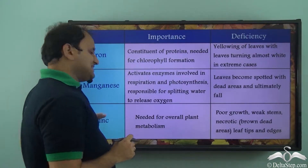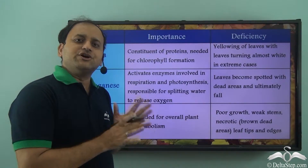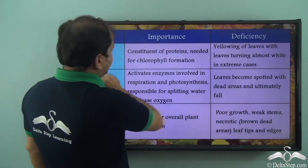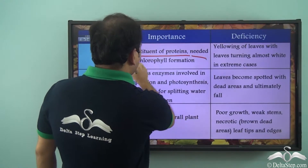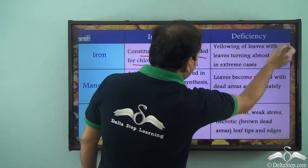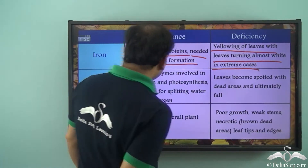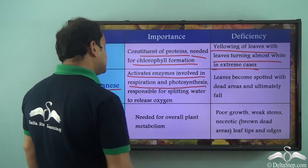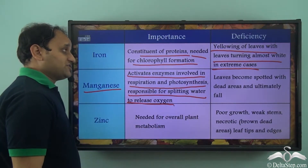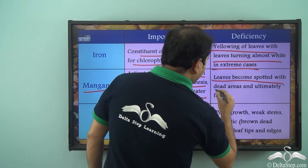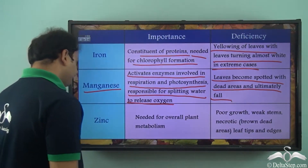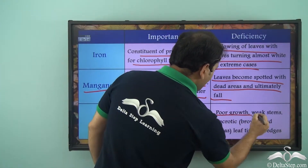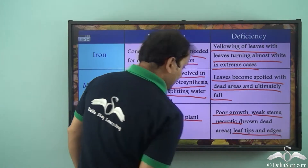So iron, manganese and zinc are three major micronutrients. Iron is a constituent of proteins needed for chlorophyll formation, with deficiency symptoms of yellowing of leaves turning almost white in extreme cases. Manganese activates enzymes involved in respiration and photosynthesis and is responsible for splitting water to release oxygen, with deficiency symptoms of leaves becoming spotted with dead areas and ultimately falling. Zinc is needed for overall plant metabolism, with deficiency symptoms of poor growth, weak stems, and necrotic leaf tips and edges.